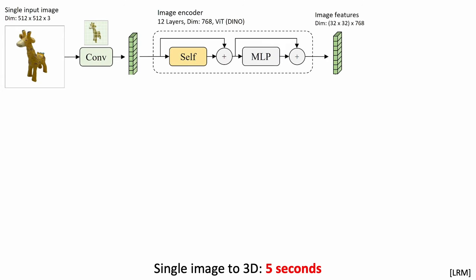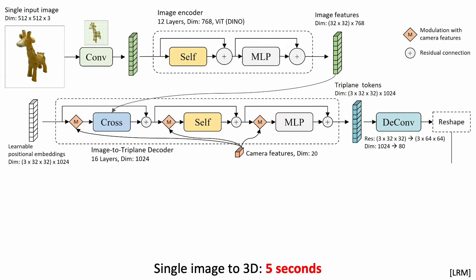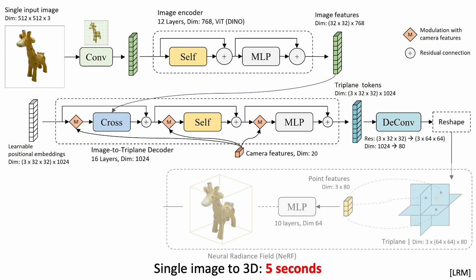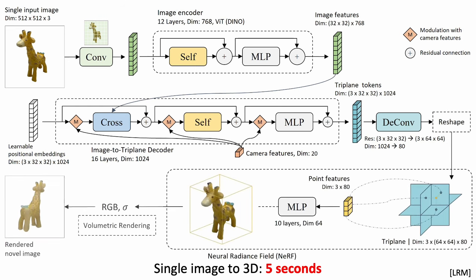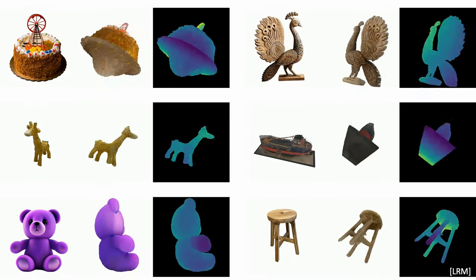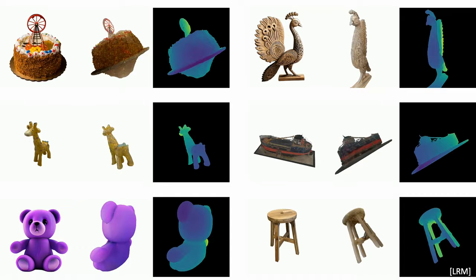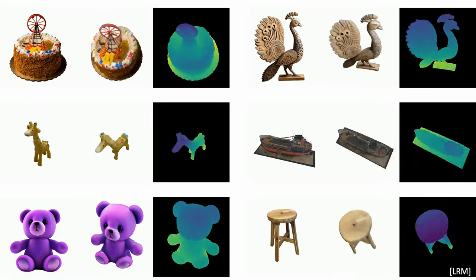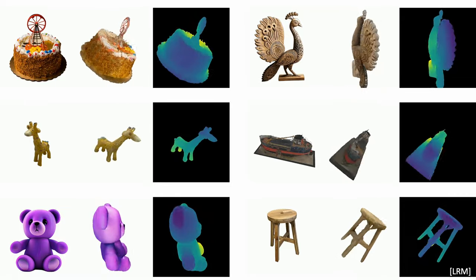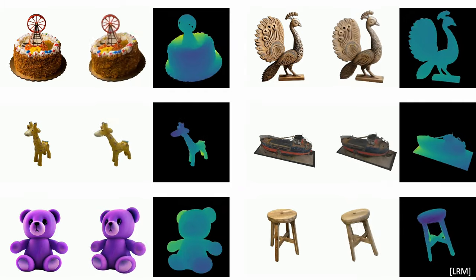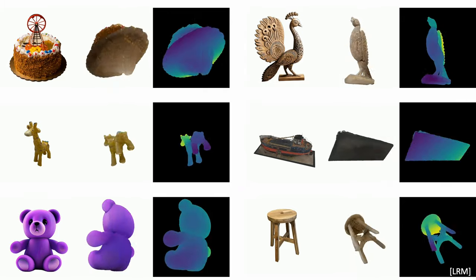Given a single input image, we first extract the image feature and use a transformer to convert the image feature to a triplane-based radiance field representation. We can supervise the entire model with the view synthesis loss. Here are some examples of single image 3D reconstruction. As it does not involve per-instance optimization, it only takes 5 seconds to predict the 3D representation from a single image.